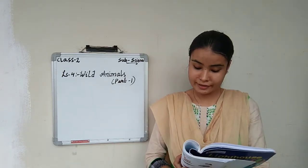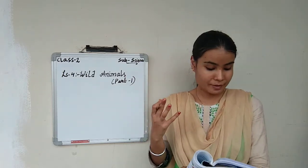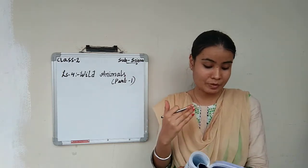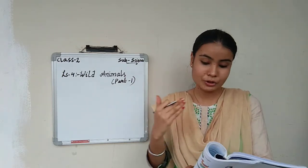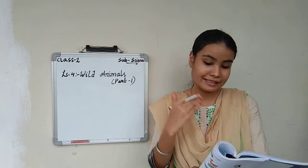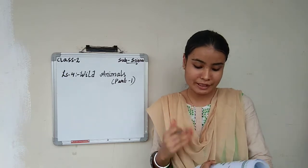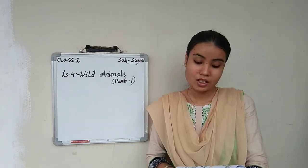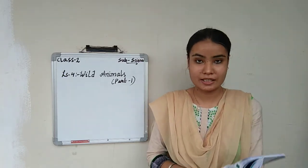So let us see what are the different types of animals. Animals are divided into three types: large animals, medium size animals, and small size animals.